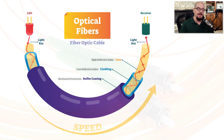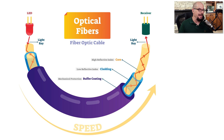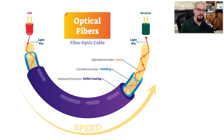We use fiber optic cables by sending light from one end of the cable to the other. This light is often created using an LED, but it might also use a laser. The light is sent inside the fiber, finds its way through, and ultimately is received on the other side.